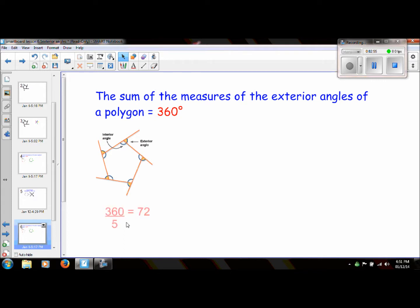And all you have to do is take 360 degrees, because the sum of all of the exterior angles is 360 degrees, and just divide it by the number of sides. 360 divided by 5 is 72.